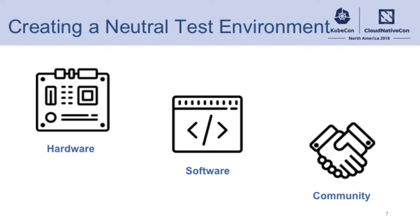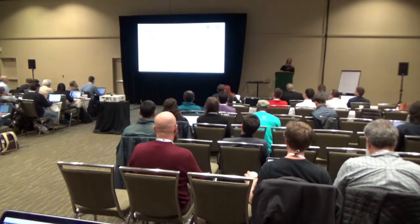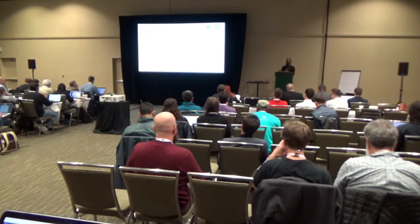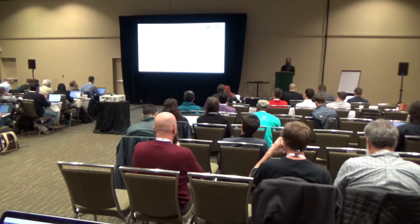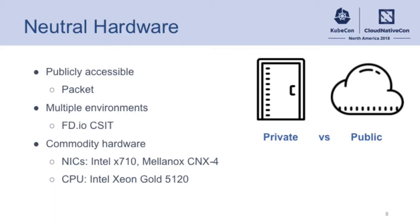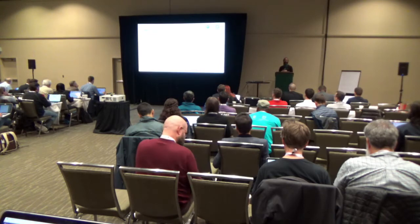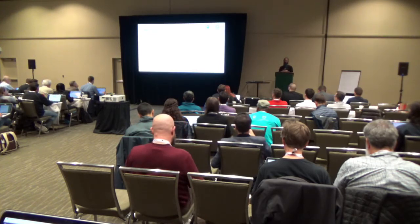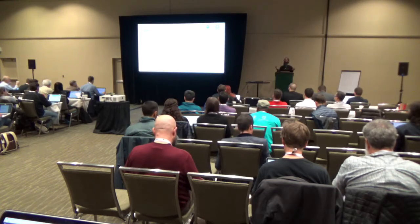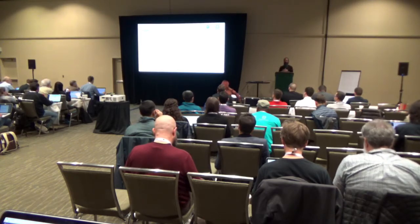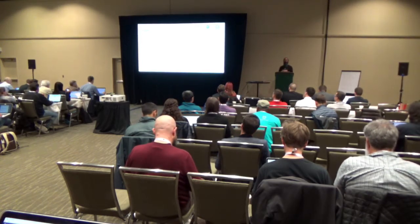We start by focusing on a neutral test environment — that means all of the infrastructure, hardware, software, and all the way through the community. For the infrastructure and hardware side, we're looking at places like Packet, which has bare metal, AWS would be another one with bare metal, open labs like the CSIT lab at FDIO, and then commodity hardware as a reference you could build from.